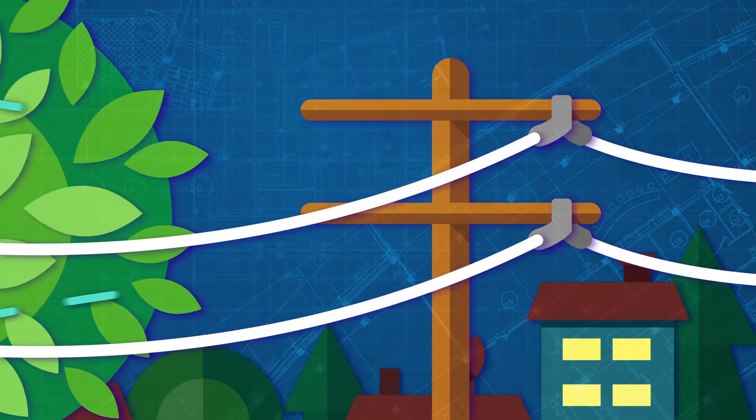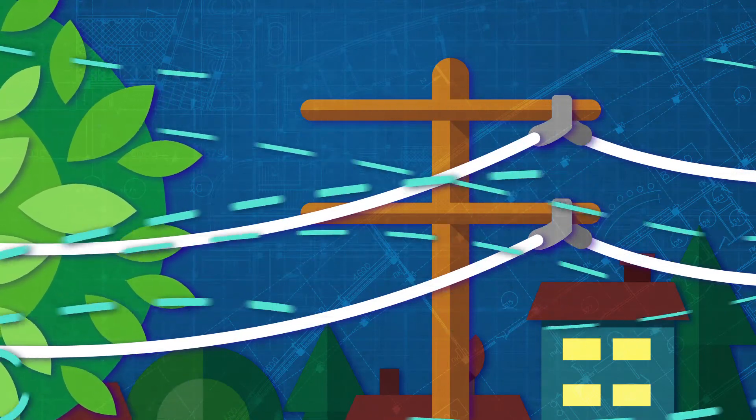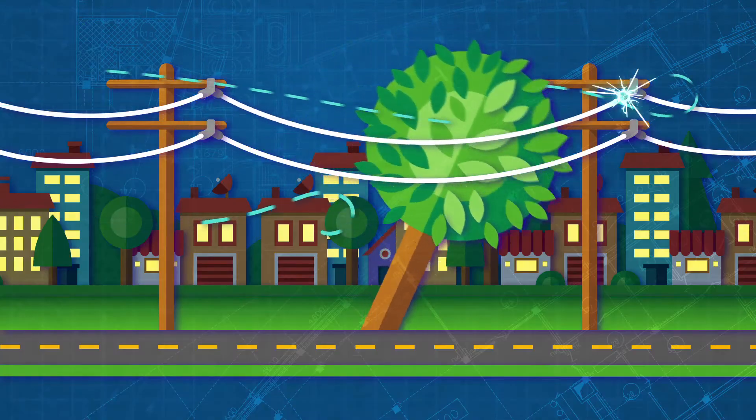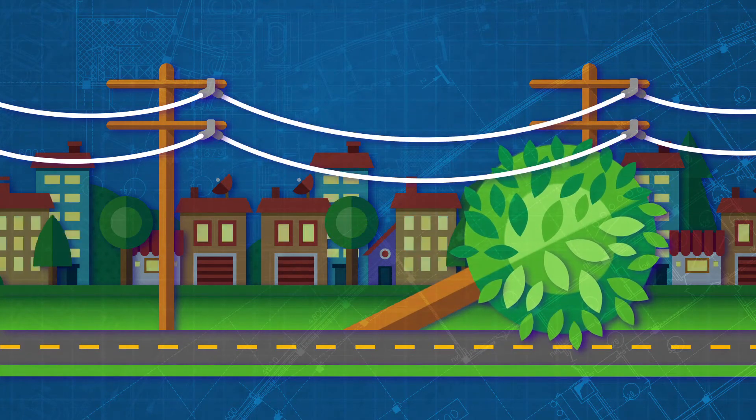Second, we have the quick-release connector on utility poles, so that when lines do go down, the poles don't go down with them, meaning restoring power is faster and easier.